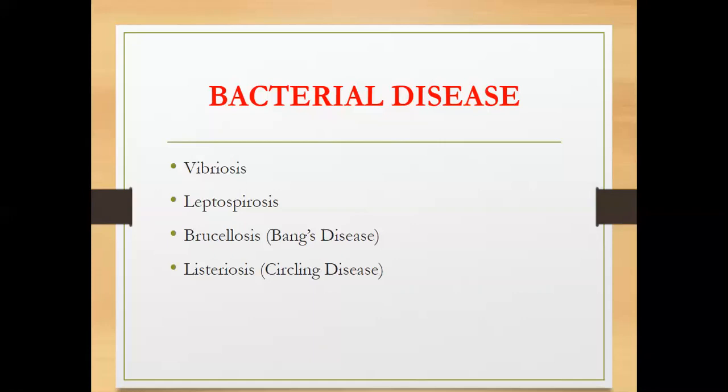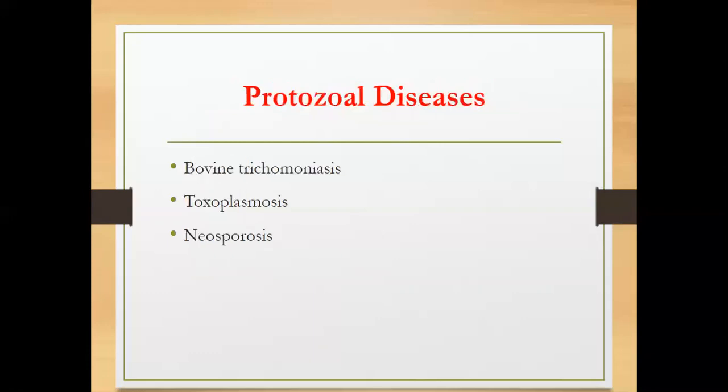Next is listeriosis, caused by the bacterium Listeria monocytogenes. It affects cattle, sheep, and goats, and is known as circling disease because it affects certain nerves directly connected to balance and the brain, causing affected animals to move in circles. Listeriosis is considered zoonotic because it can cause meningitis in humans. In livestock, it causes late-stage abortion.